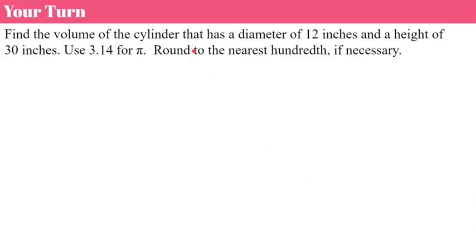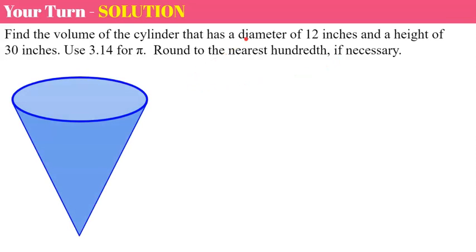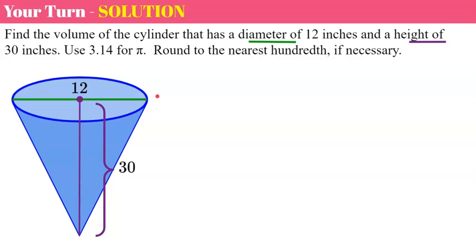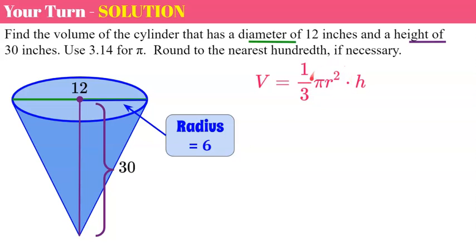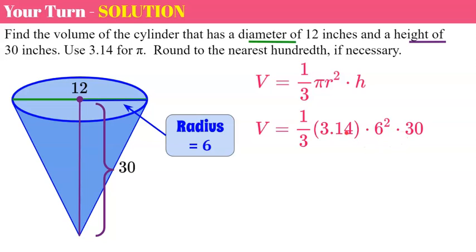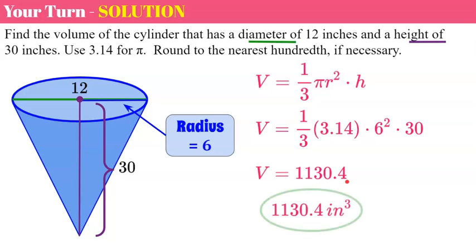Now it's your turn. Find the volume of the cone with a diameter of 12 inches and a height of 30 inches. Use 3.14 for pi and round to the nearest hundredth if necessary. Pause now. Welcome back. Diameter of 12 inches means radius is six. Height is 30 inches. Formula: one-third times π times r squared times h. Six squared times 30 times 3.14 divided by three gives you 1,130.4 cubic inches.